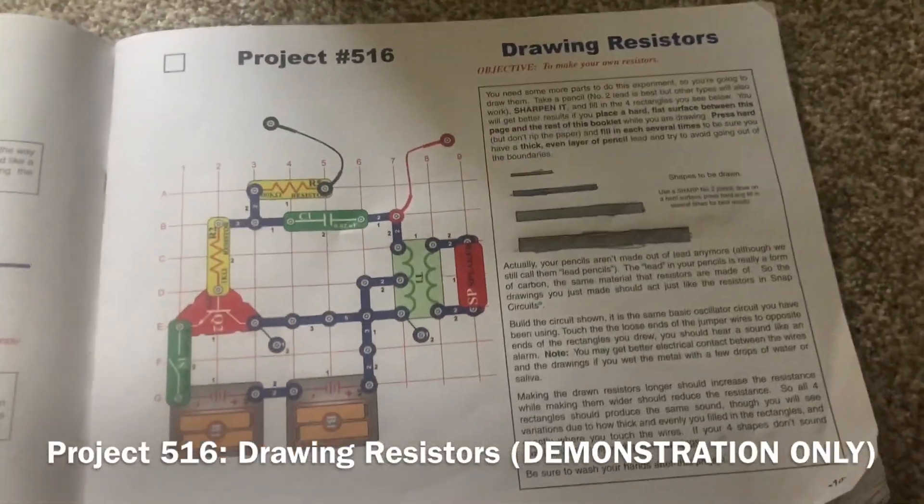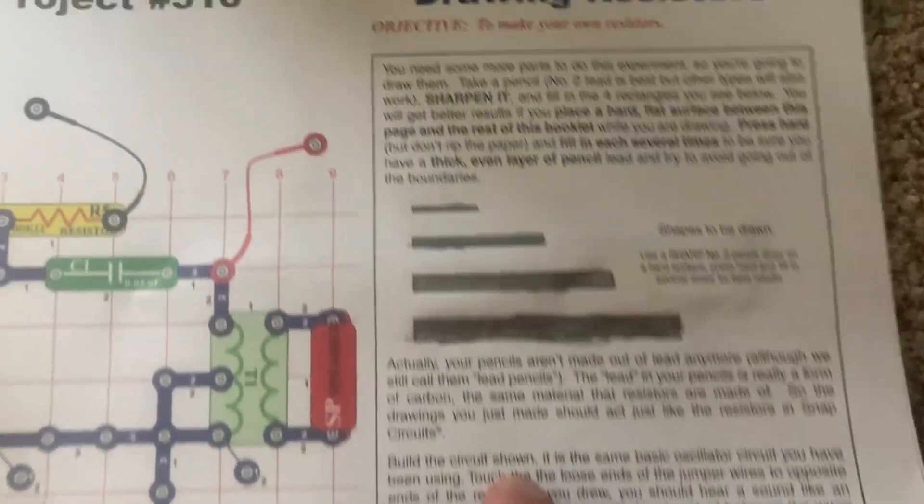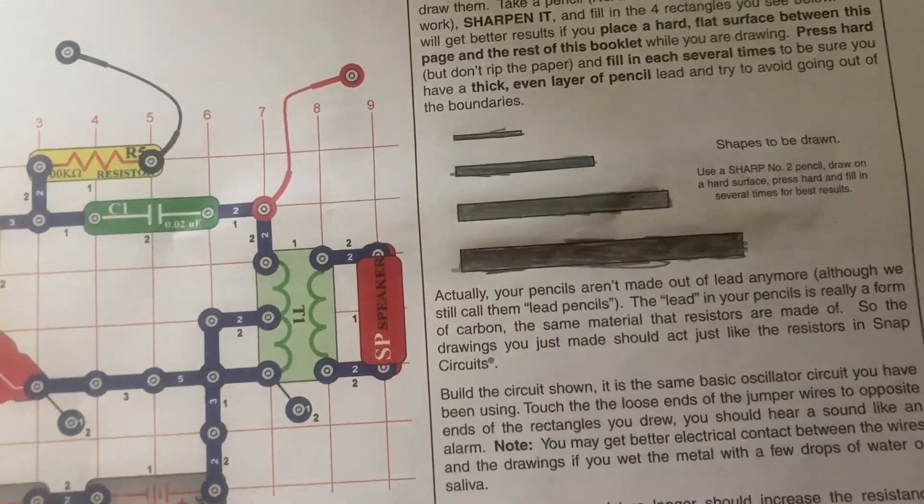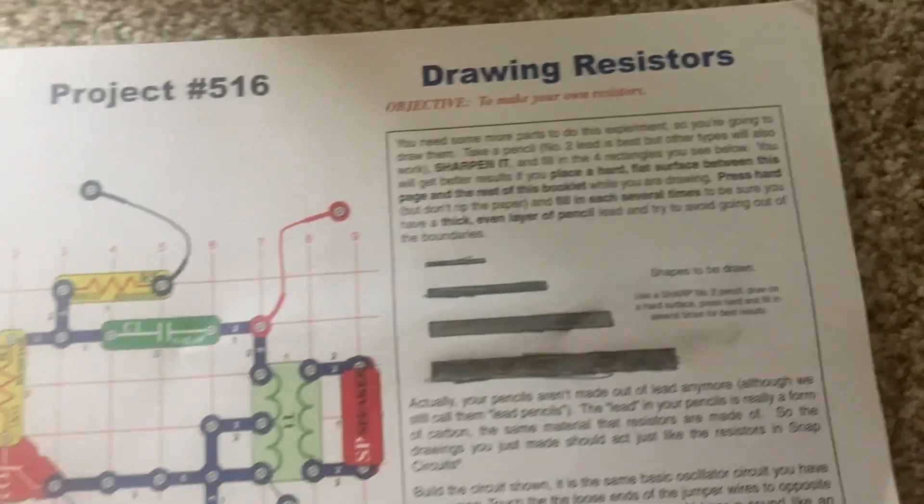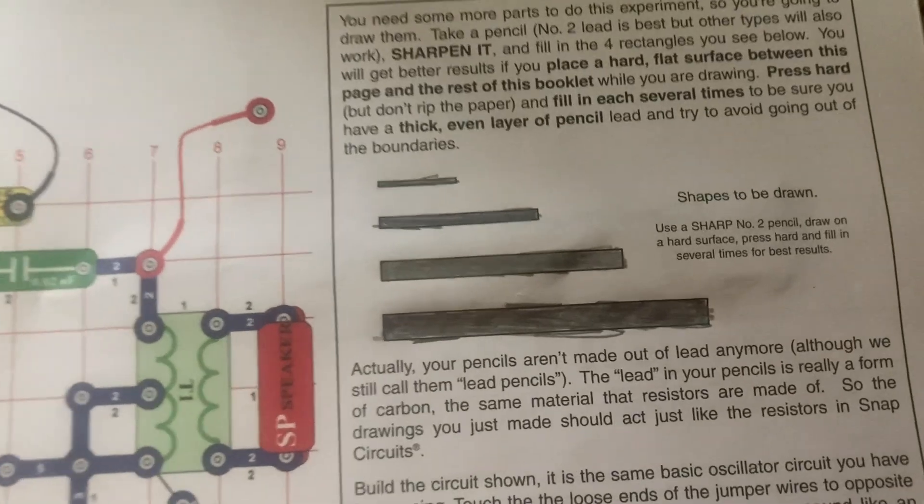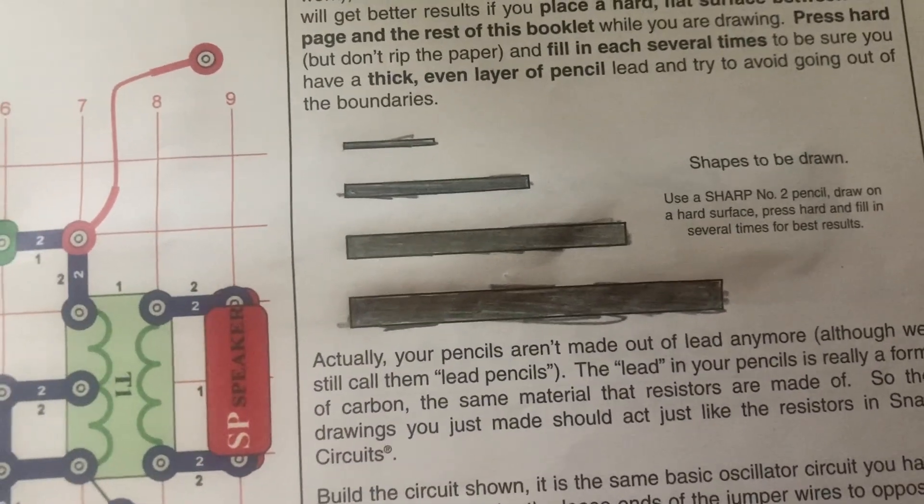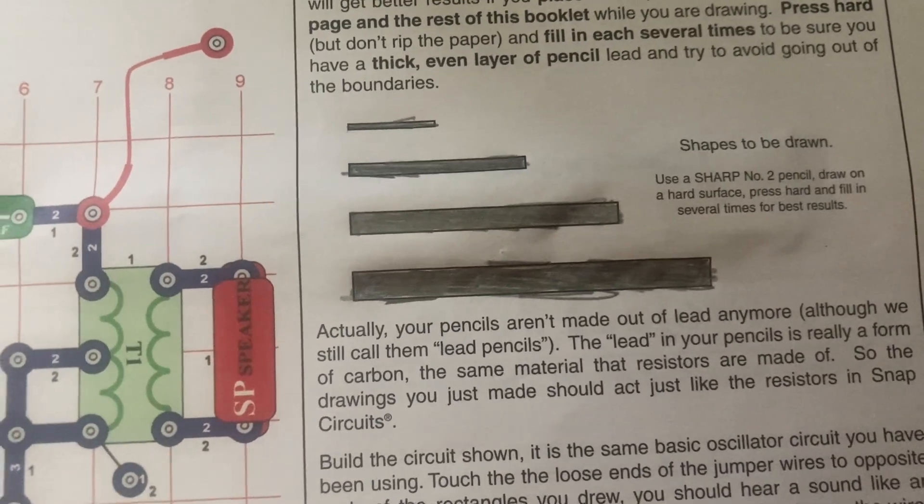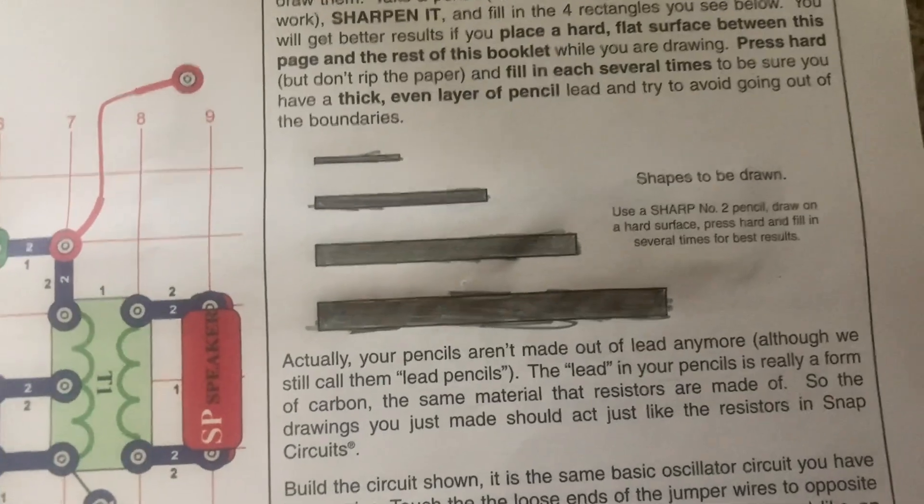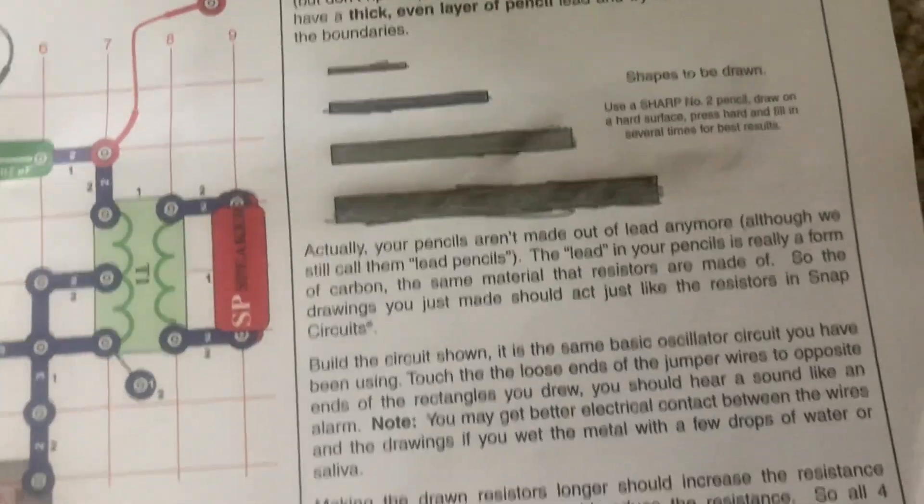The following three projects will be demonstrations only because they require you to touch the ends of jumper wires to different shapes that are filled in with pencil lead. And this first project will explain how you can draw your own resistors. You would fill in these different sized rectangles with several layers of pencil lead, which is actually a form of carbon.